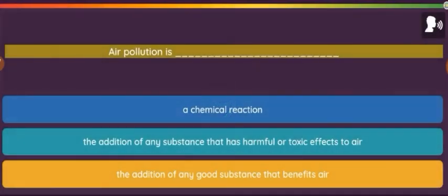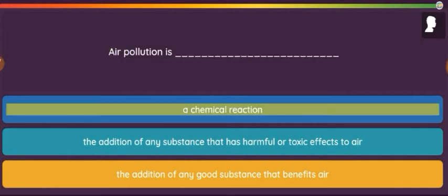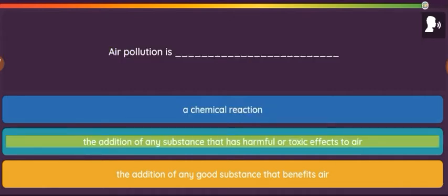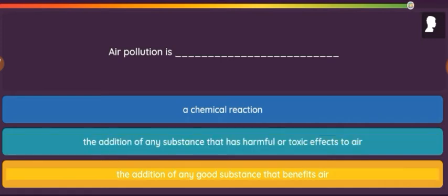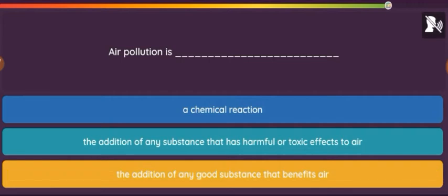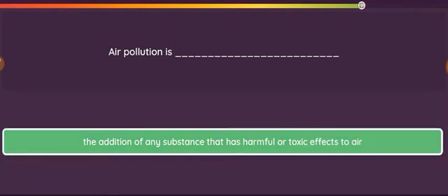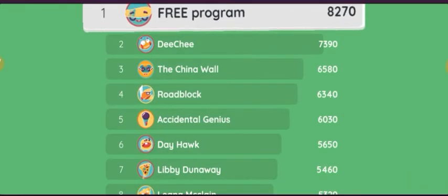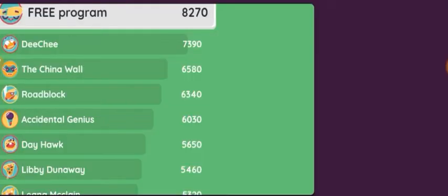Question: Air pollution is. Option 1: A chemical reaction. Option 2: The addition of any substance that has harmful or toxic effects to air. Option 3: The addition of any good substance that benefits air.